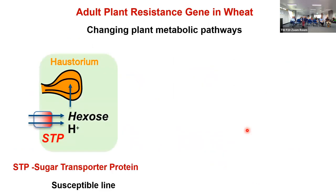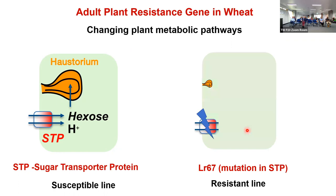Adult plant resistance works differently — it changes the plant's metabolic pathways. A good example is the sugar transporter protein. In a normal wheat plant, this protein transports sugar molecules from outside the cell to inside, where the rust haustorium takes the sugar to proliferate. In resistant lines, the sugar transporter is a mutant form — it cannot transport sugar molecules, so there isn't enough sugar inside the cell, and the rust fungus cannot proliferate as effectively. This is why adult plant resistance genes are multi-pathogen and multi-strain resistant.